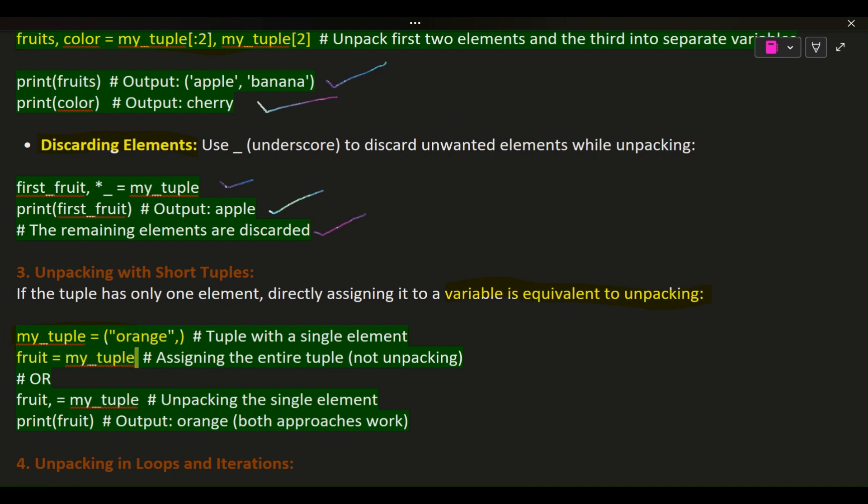fruit = my_tuple # Assigning the entire tuple (not unpacking) # OR fruit = my_tuple # Unpacking the single element. print(fruit) # Output: orange (both approaches work)